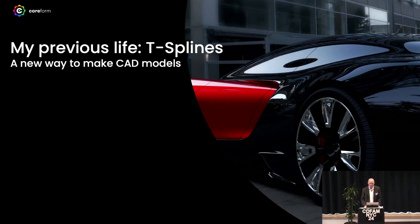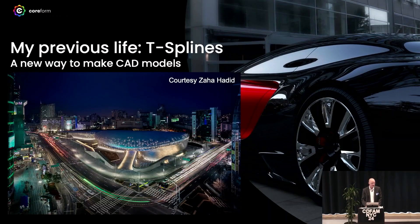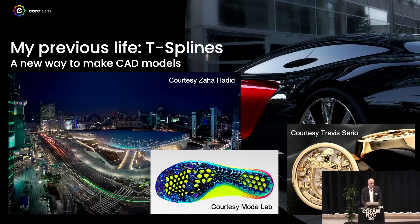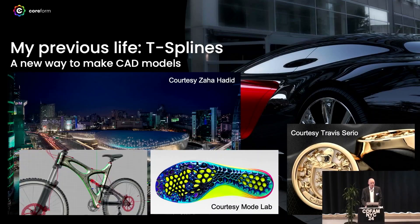To introduce myself before I get started: in my previous life I had a company called T-Splines, which introduced a new way to make CAD models to a number of industries, including automotive design, architecture, industrial design, consumer products, and jewelry. We commercialized this technology through plugins to Rhino and SolidWorks, and then over a decade ago Autodesk acquired this. The T-Splines technology is now available in Fusion 360, Inventor, and Dynamo. I left Autodesk about eight years ago to start a new company with some co-founders to introduce a new way to run finite element analysis, and that's what I'd like to talk with you about today.